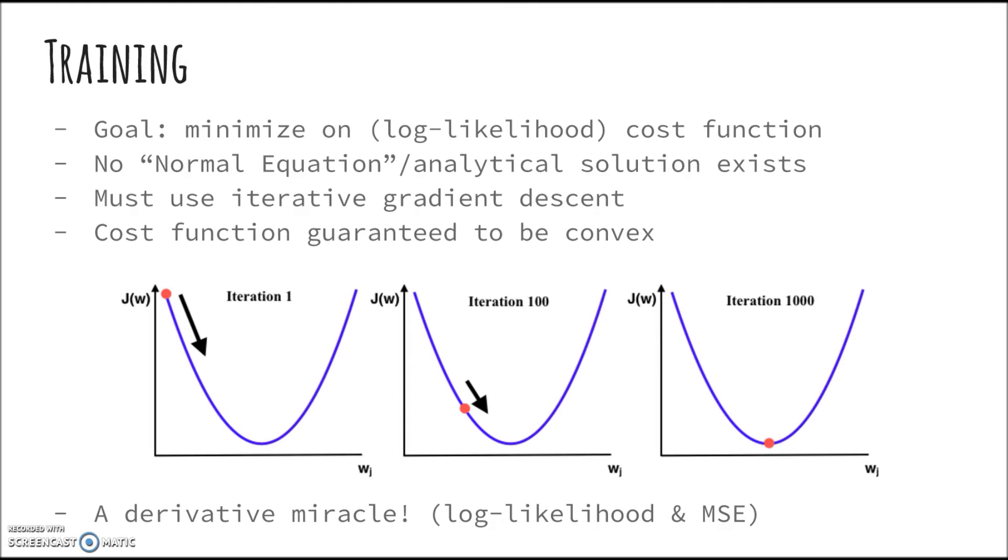One may now ask, how insanely complex is the derivative of the log-likelihood function? Actually, it's a miracle, or perhaps not so much, as this is another reason sigmoid was chosen, because the derivative of the log-likelihood function is exactly the same as the derivative of the MSE cost function in linear regression. How convenient? You might want to go back to lesson 4.1 to review what the derivative looked like.